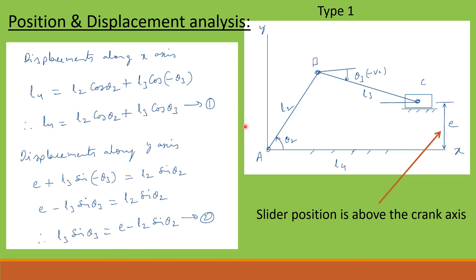Similarly, displacements along the y-axis can be written as E plus L3 sin(minus theta 3) equal to L2 sin theta 2. Since L3 sin(minus theta 3) becomes minus L3 sin theta 3, we get E minus L3 sin theta 3 equal to L2 sin theta 2. After rearranging, we get L3 sin theta 3 equal to E minus L2 sin theta 2. Let us call that equation 2.